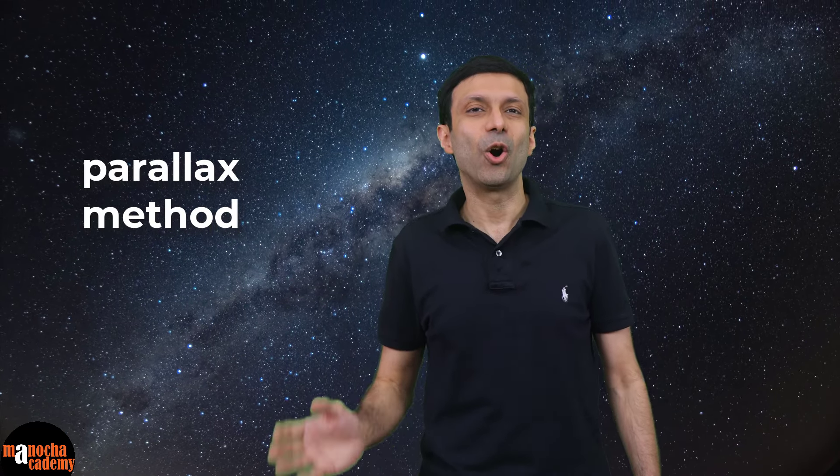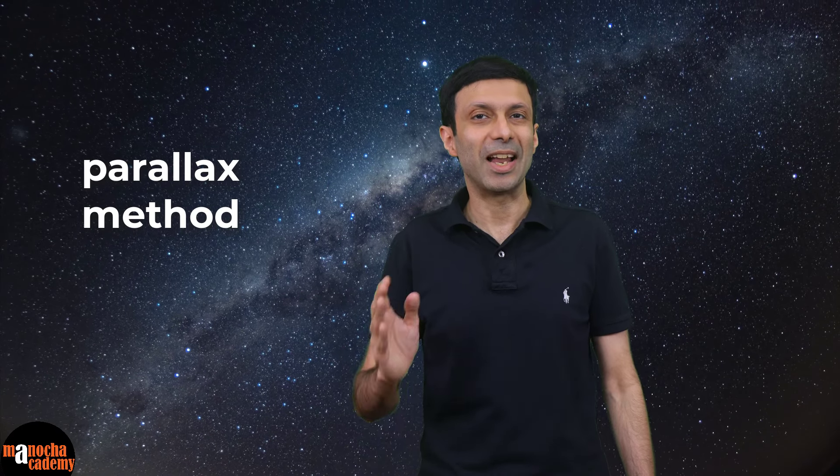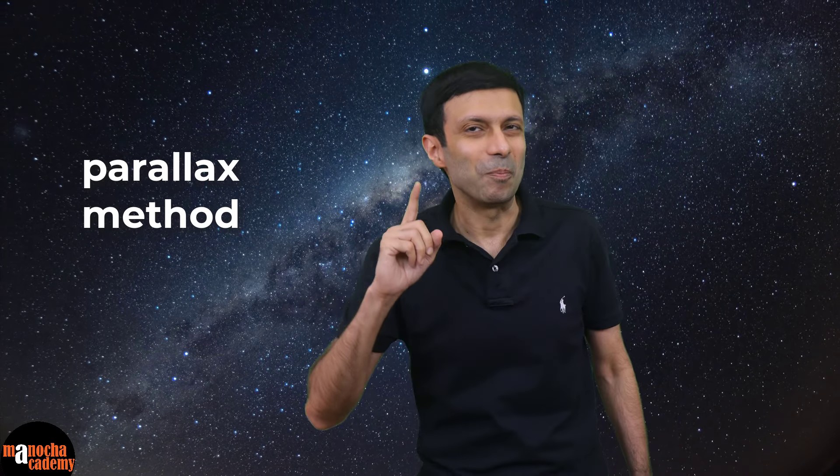Let's look at how we can calculate the distance of planets and stars using this parallax method. Just like the pencil case, for the planets or the stars, we will observe them from two different places on the earth. So let's say we are observing a star and we will measure the angle of the star from two places on the earth.